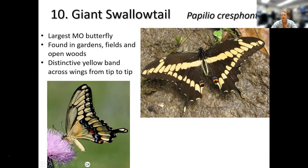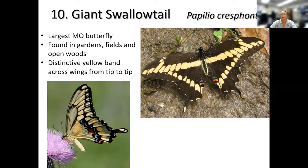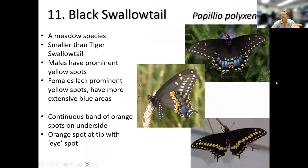The giant swallowtail when wings are closed has quite a bit of yellow. When wings are open it's reversed — all black with yellow stripes. Gorgeous to see them flying. They eat citrus plants — there's a rue people can plant. In Missouri the native host plant in the citrus family is prickly ash and wafer ash. I have tons of prickly ash at my farm in Ray County and we see quite a bit of the giant swallowtail here at Burr Oak Woods too.